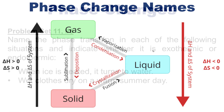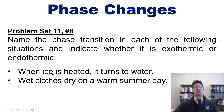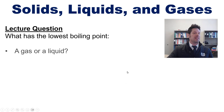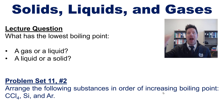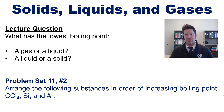That takes us to some sample problems. The first says: name the phase transition in each of the following situations and indicate whether it is exothermic or endothermic — specifically, solid ice converting to liquid water, and liquid water in clothing converting into gaseous water. The next question asks: which of the following has the lowest boiling point, a gas or a liquid, and separately, a liquid or a solid? Our last problem asks you to arrange substances in order of increasing boiling point. Remember that solids have higher boiling points than liquids, which have higher boiling points than gases — so look up the physical state of each substance to sort them.